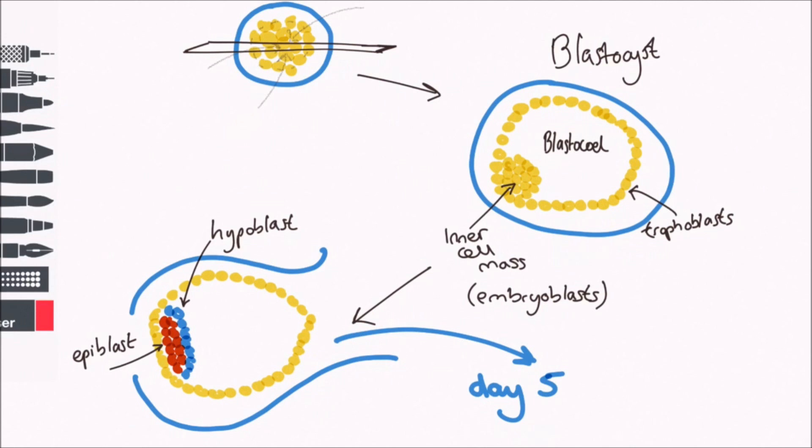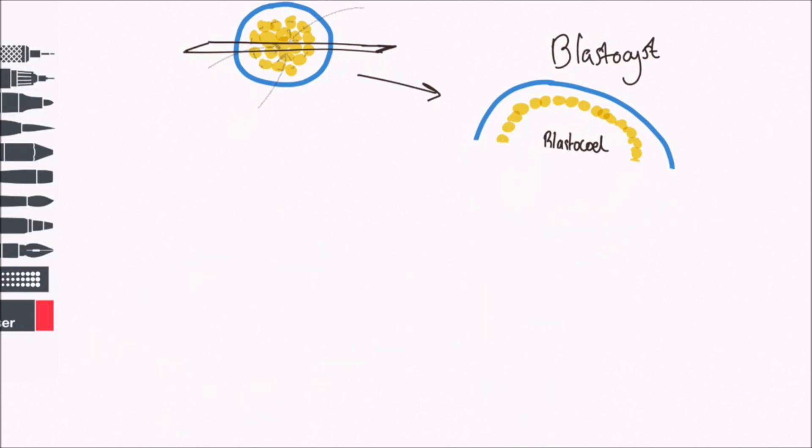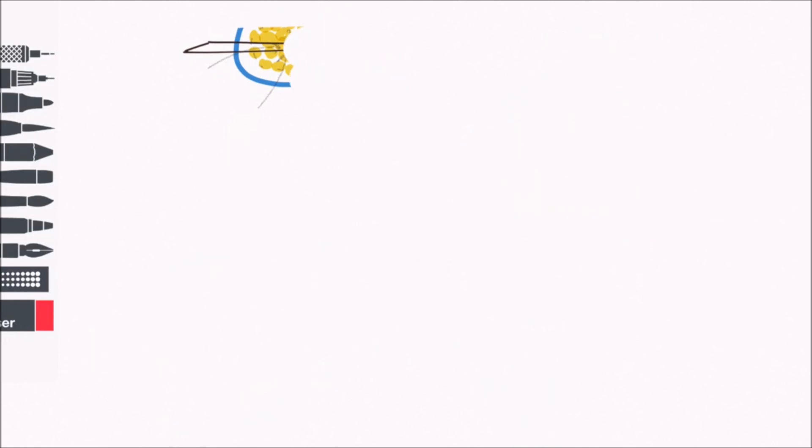Implantation occurs on the sixth day and is complex, so we will leave the details to another video, but the result of implantation is our blastocyst embedded in the endometrium of the mother.